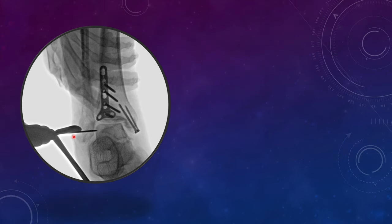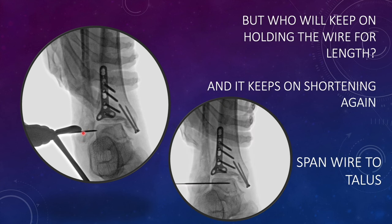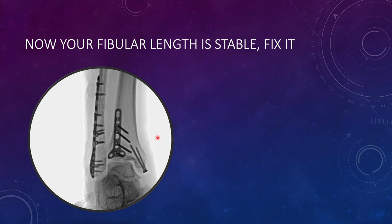Once satisfied that the alignment was correct after comparison with the opposite side, the challenge was that the surgeon could not hold the joystick wire while also placing a plate. So we transfixed the wire from the fibula into the talus — since the talus cannot migrate upward, it holds the fibula length at the correct level. This freed the surgeon to pass the plate over the lateral surface. The oblique fracture was then reduced with lag screws, and a neutralization plate was placed over the lateral surface.